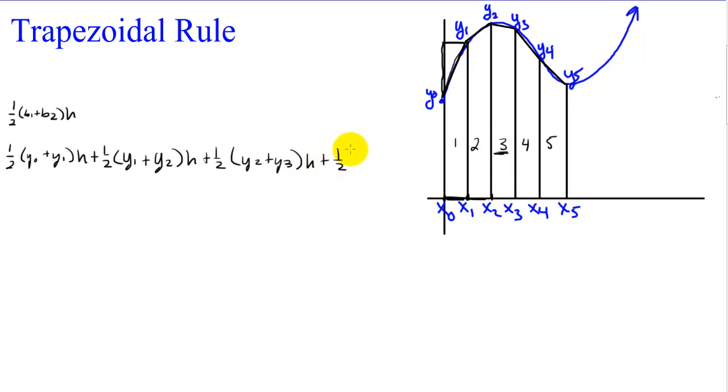Plus one half times y sub 3 plus y sub 4 times h. So we have 1, 2, 3, 4 trapezoids. There's the fourth one. And then the fifth one is plus one half times y sub 4 plus y sub 5 times h.